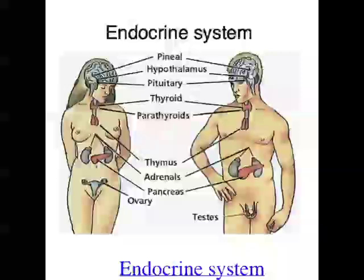Because hormones — the messengers of the endocrine system — are released and travel in the bloodstream, when you compare the speed of message transport between the endocrine system and the nervous system, you find that the nervous system is able to transmit messages much more quickly. That's basically because it sends electrical messages in special cells called neurons around the body, but we'll talk about that a bit later.